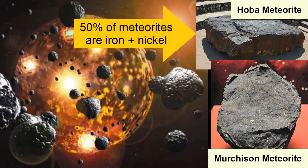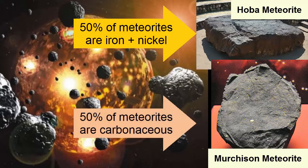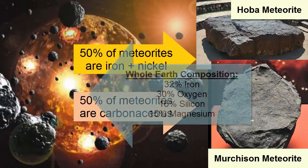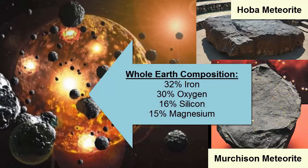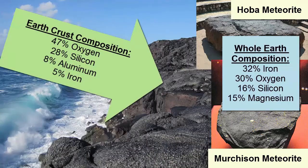About one half of the meteorites in our solar system are dense stony iron and nickel. The other half are made of less dense carbonaceous materials. Combined together, they represent the total composition of Earth's rocks, estimated at mass percentages of roughly 32% iron, 30% oxygen, 16% silicon, and 15% magnesium.